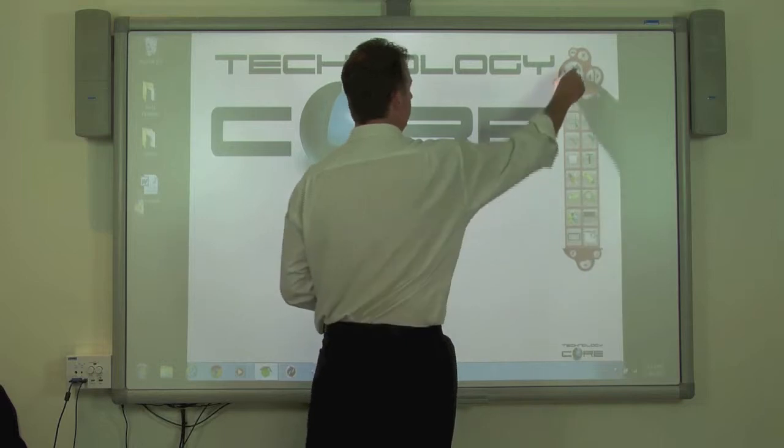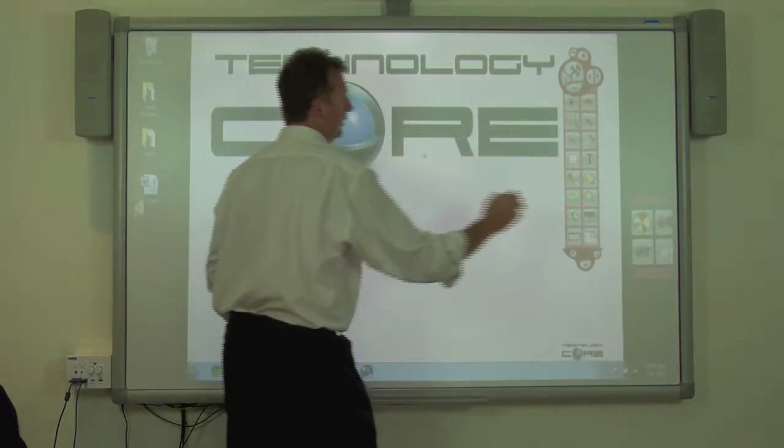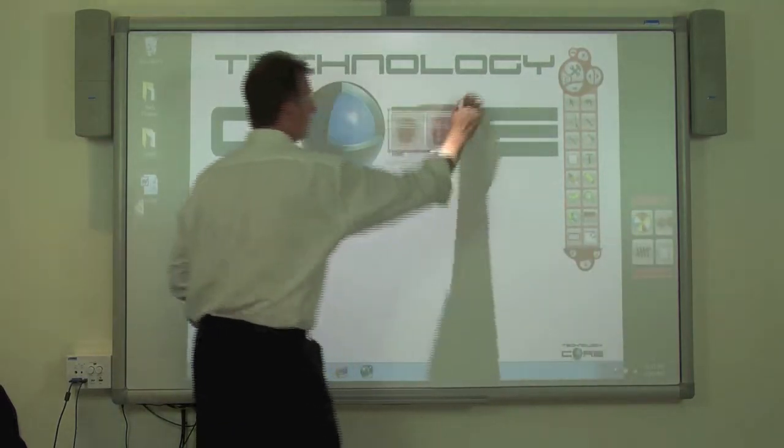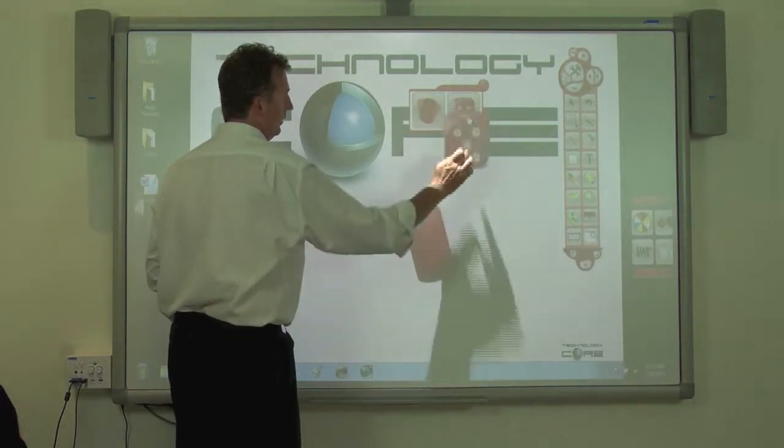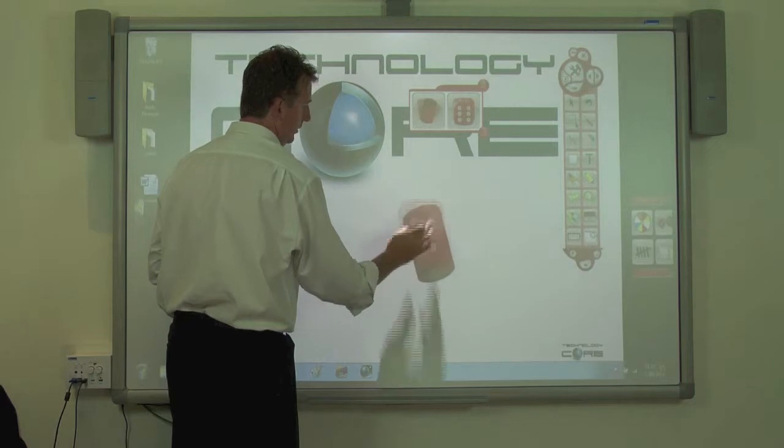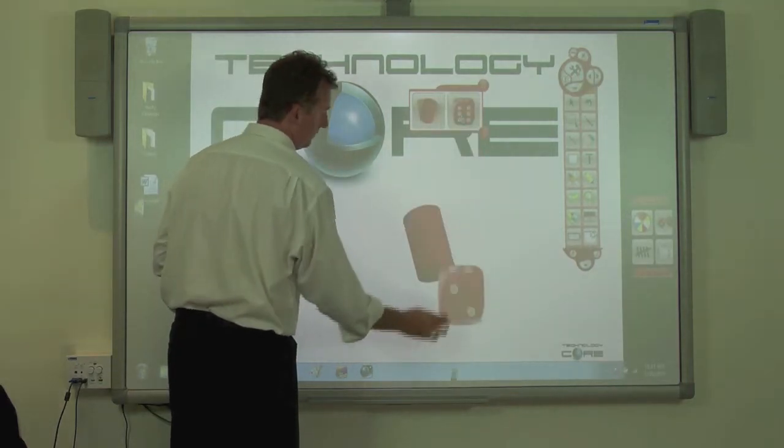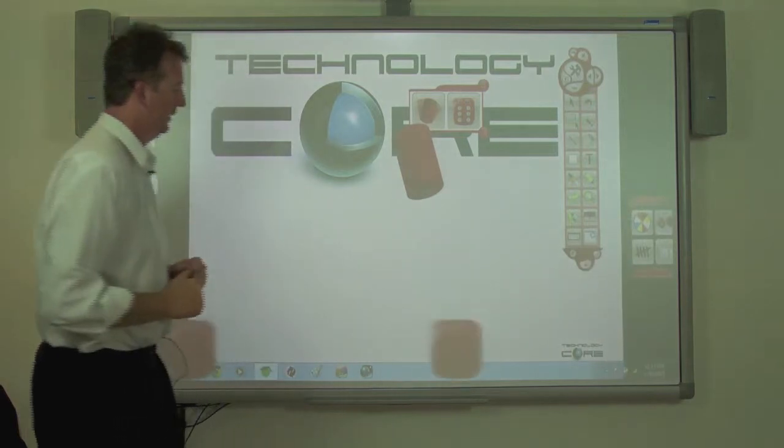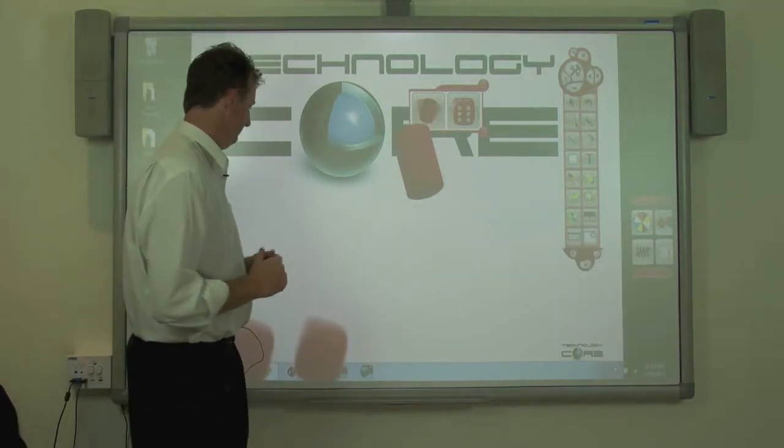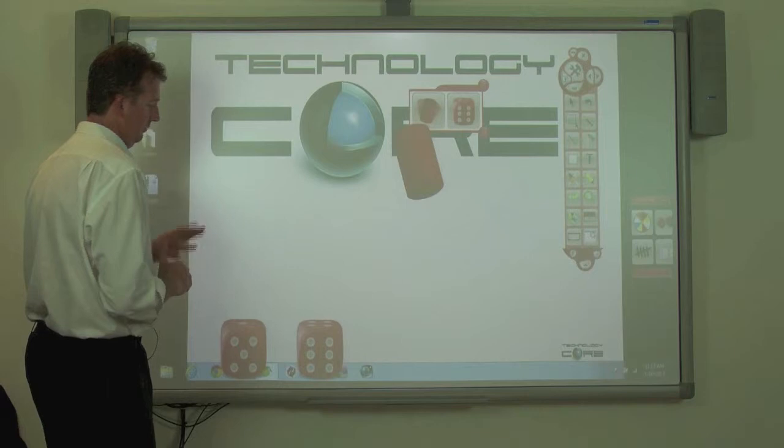The other one that we've got is our dice. So we can either bring out our cup, drop our dice into there, and then we just spin it, and it comes out. Now it does go for a little bit long, but that's a bit better.